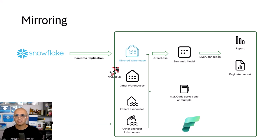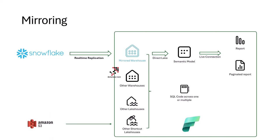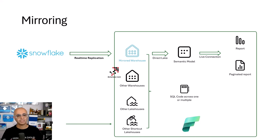You can use that mirrored warehouse data just by itself, having a Power BI semantic model with a Direct Lake connection, because that's a warehouse like any other warehouse in Microsoft Fabric. You can also use the data of that mirrored warehouse and use T-SQL cross joins between tables across warehouses — including this mirrored one and others, even those using shortcuts, like one coming from Amazon S3. You can merge, join, and run SQL queries, use notebooks on top of the semantic model, and much more, because now you have the data inside Fabric.